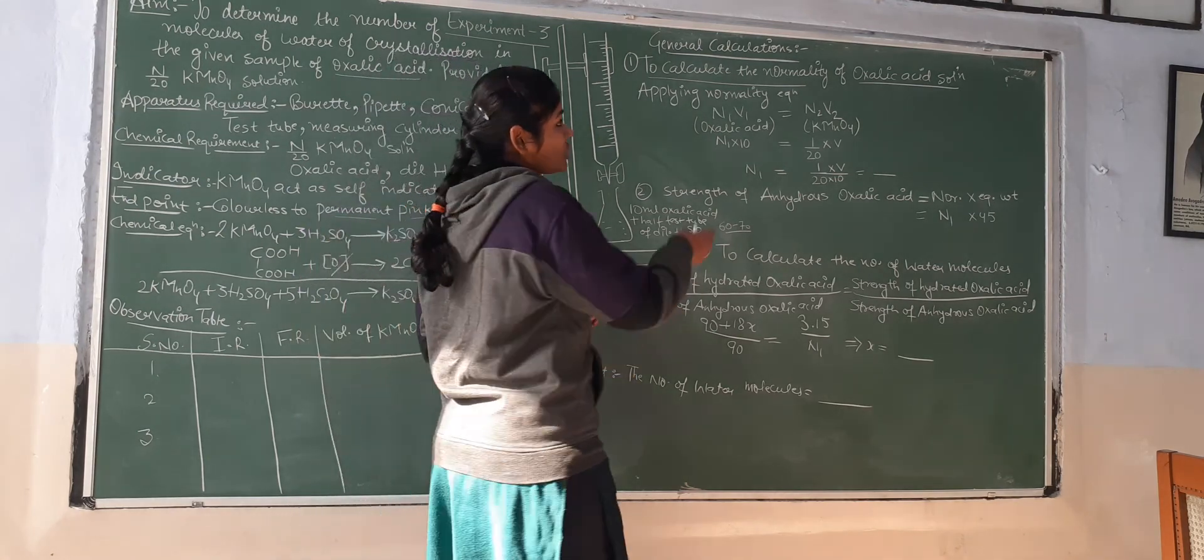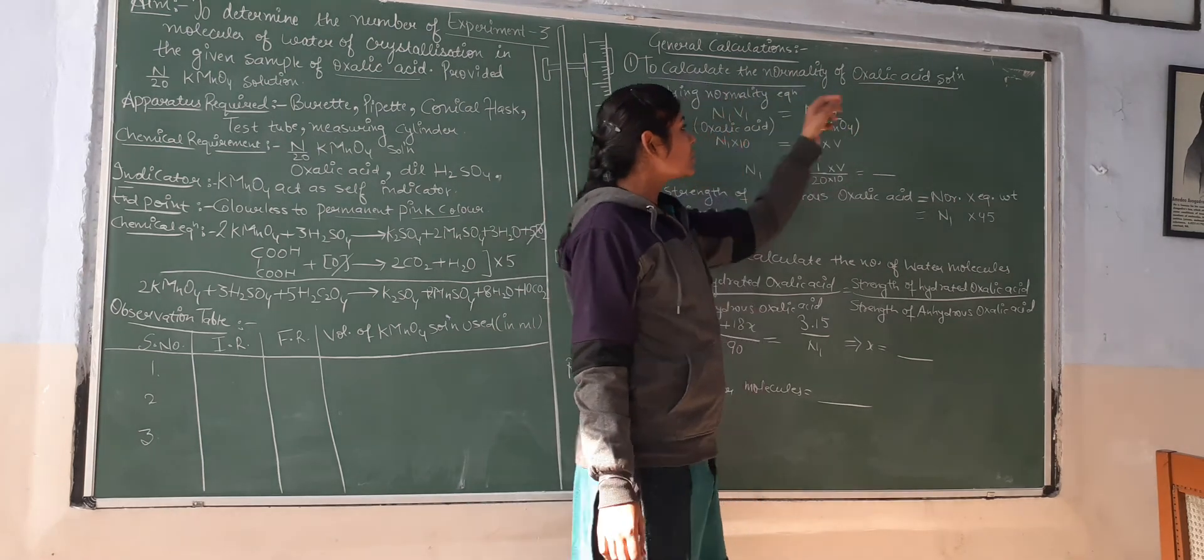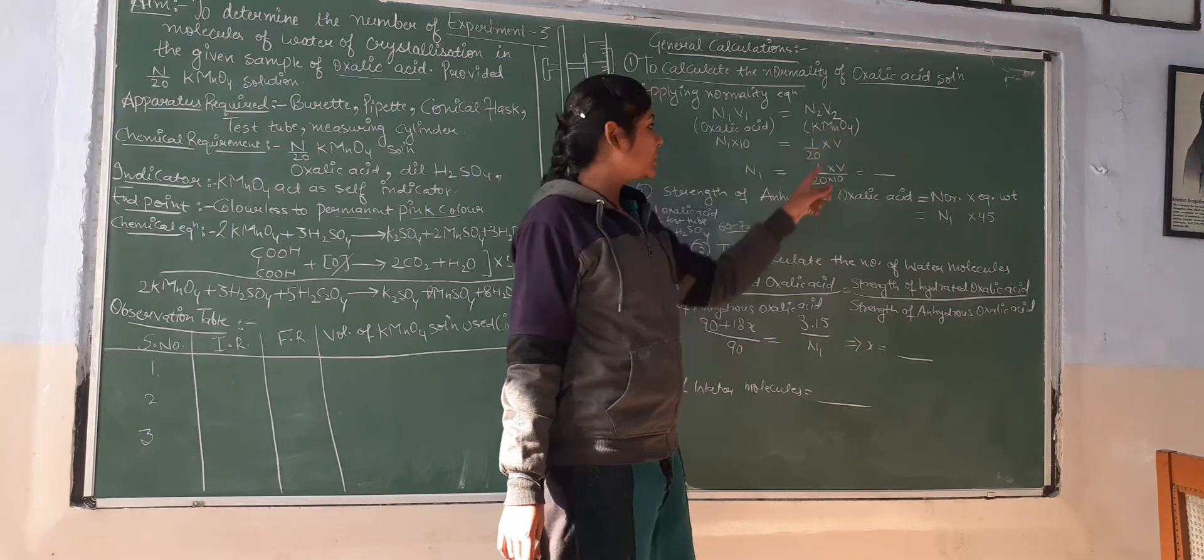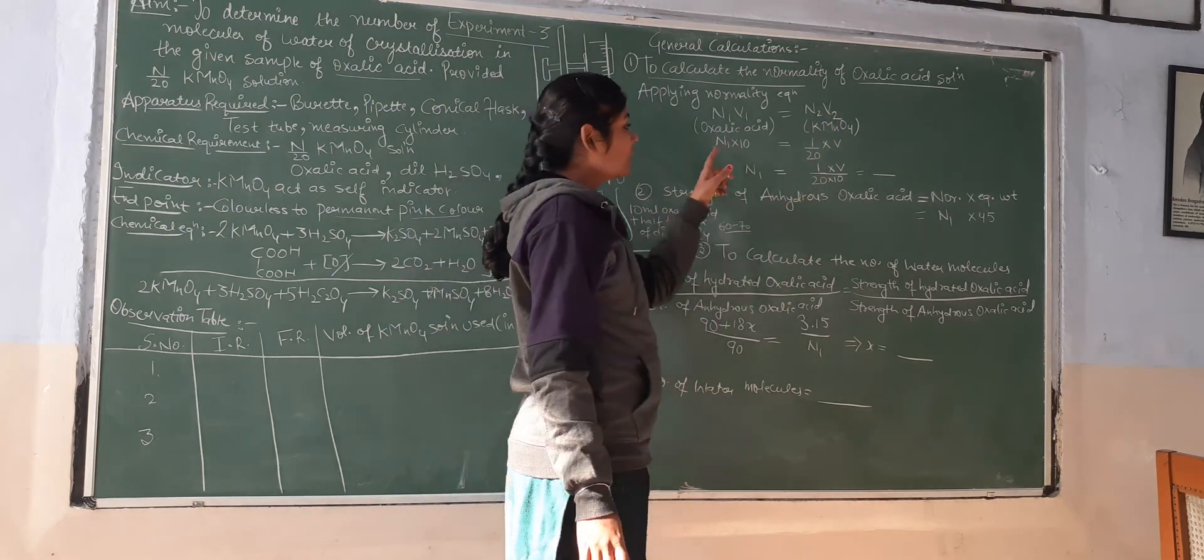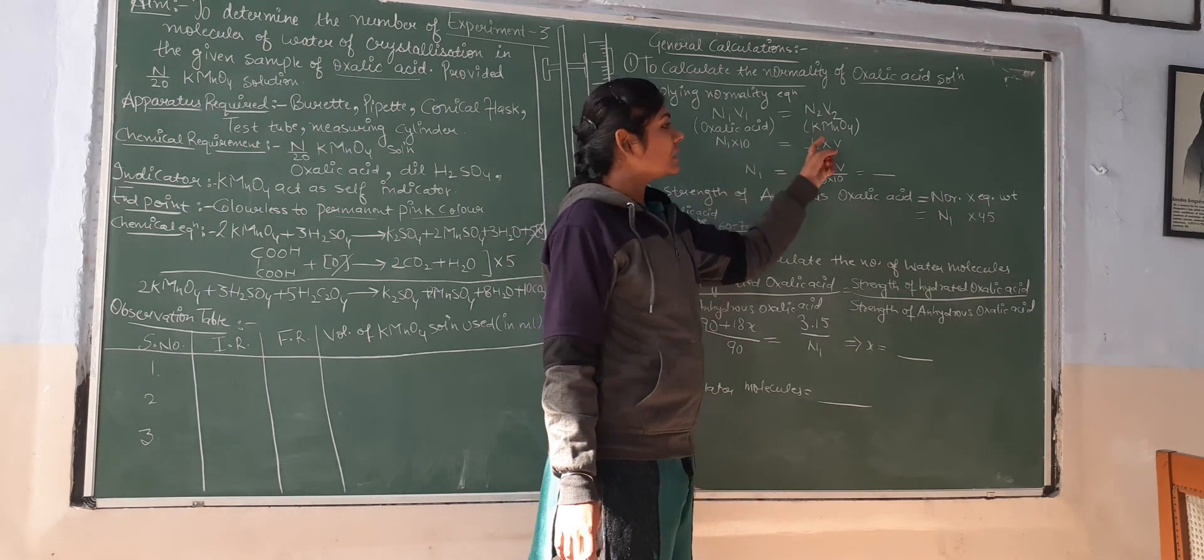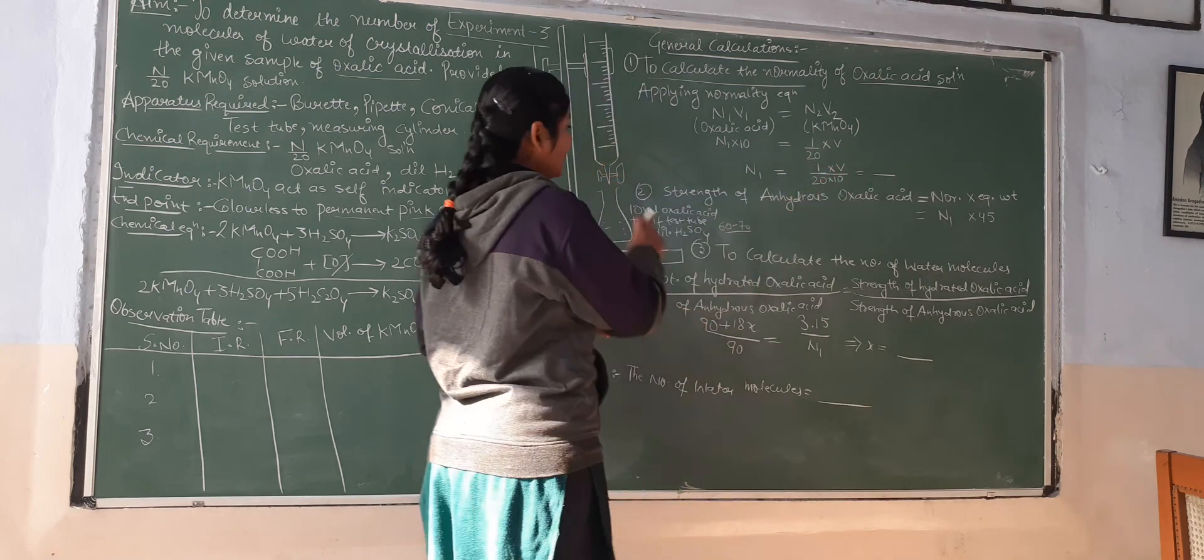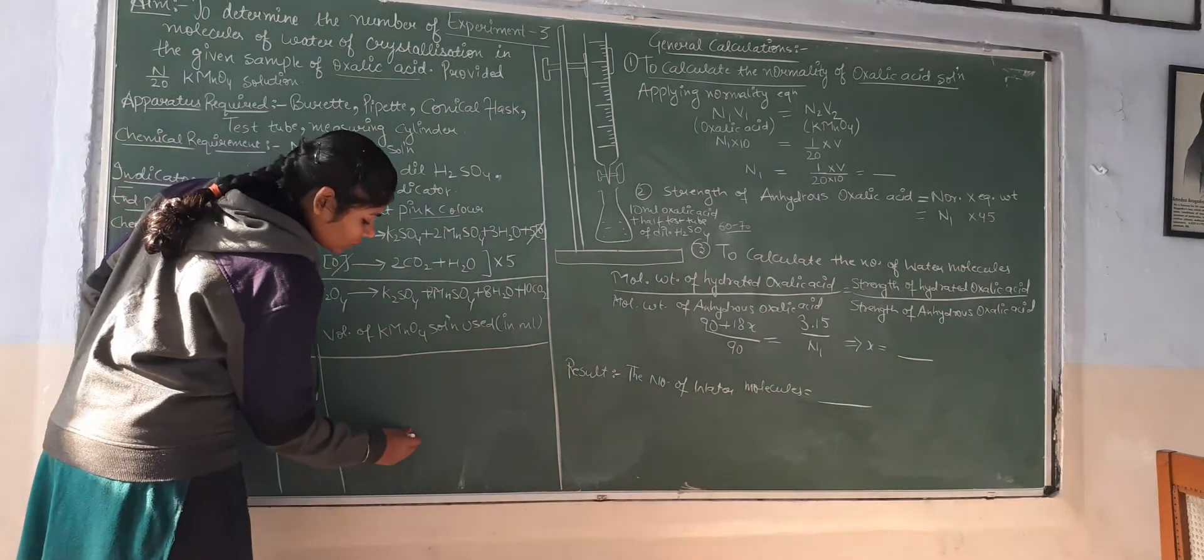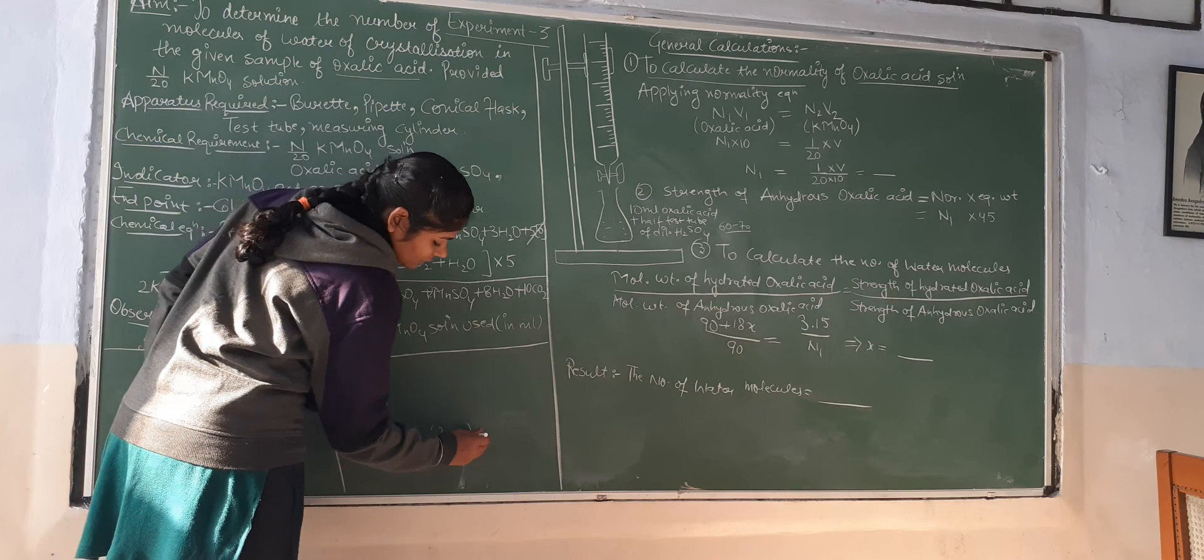Now we have to do calculations. First of all, calculate the normality of oxalic acid solution using N1V1 equals N2V2. Take reading 1 plus reading 2 plus reading 3 divided by 3 to get the average volume. Then calculate the normality of oxalic acid.